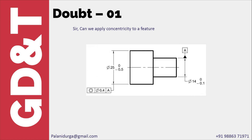One more thing to notice: whenever you apply concentricity, if you are following ASME Y14.5 2009 or earlier versions of the standard, the datum you take must always be RMB. You cannot apply MMB or LMB for the datum when using concentricity. Also, for the geometrical tolerance value, you will not be able to provide MMC or LMC modifiers.